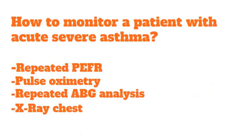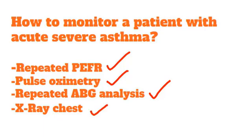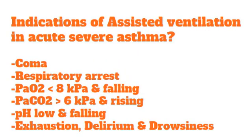To monitor a patient with acute severe asthma, repeated peak expiratory flow rate measurements every 15 to 20 minutes are needed. Pulse oximetry must also be performed repeatedly, as the desired oxygen saturation should be at least above 92 percent. Additionally, repeated arterial blood gas analysis and a chest X-ray are required — the chest X-ray is done to exclude other pathologies such as pneumothorax.